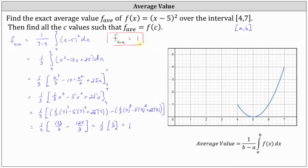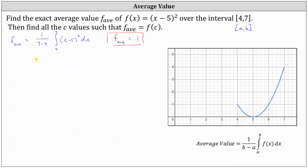For the second part, we're asked to find all the values of c such that the average value equals f(c). We'll set f(c) equal to the average value of one. Since f(x) = (x-5)², f(c) = (c-5)², giving us the equation (c-5)² = 1. We can solve this two ways: take the square root of both sides, or expand to get c² minus 10c plus 25 equals one. I'll go ahead and show both methods.